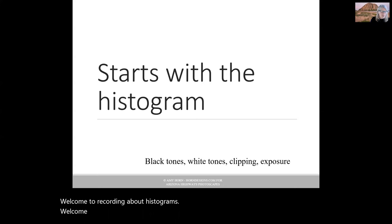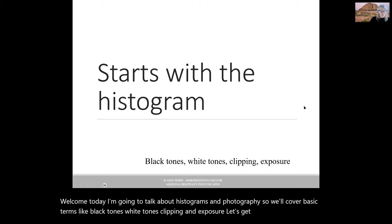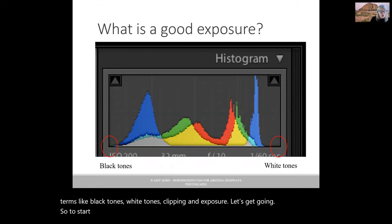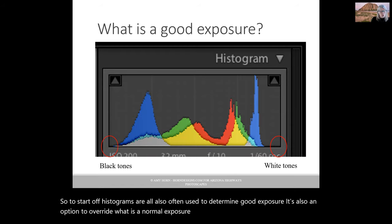Welcome. Today I'm going to talk about histograms and photography. We'll cover basic terms like black tones, white tones, clipping, and exposure. Let's get going. To start off, histograms are often used to determine good exposure. It's also an option to override what is a normal exposure and what the camera gives you. We'll learn how to evaluate that.